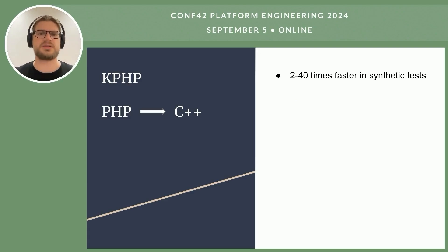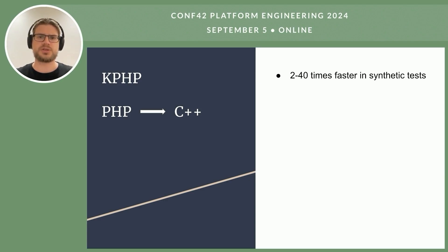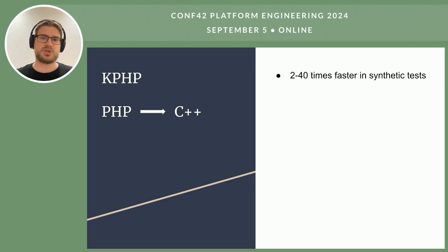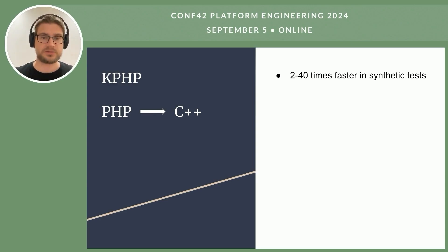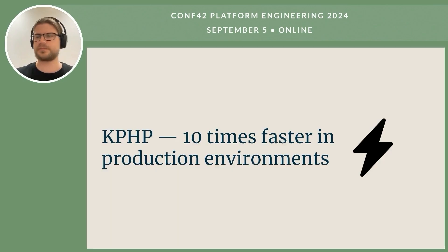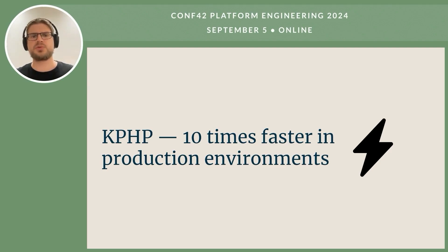The next challenge was optimizing the application code itself. It was written in PHP and became too slow, but changing the language was impossible with millions of lines of code in the project. So the goal of KPHP Compiler is to transform PHP code into C++. This approach boosts performance without the extensive problems associated with rewriting the entire codebase. In real production environments, KPHP proved to be from 7 to 10 times faster than plain PHP.